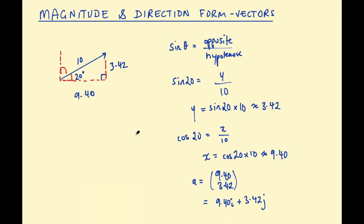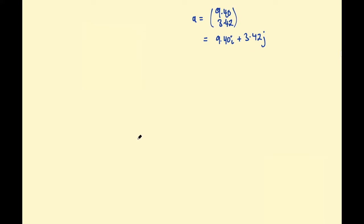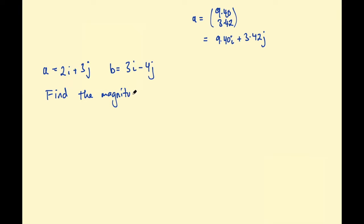That covers converting from magnitude direction form to column vector form. You should also be able to go the other way: if you're given a vector in ij notation or column vector form, you need to convert it to magnitude direction form. Let's look at an example: given a = 2i + 3j and b = 3i − 4j, find the magnitude of a + b.